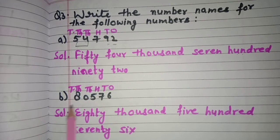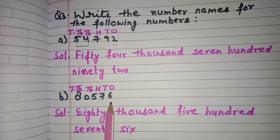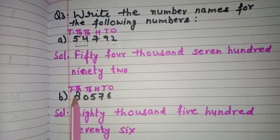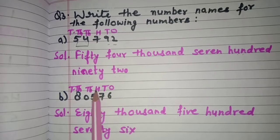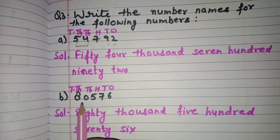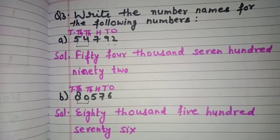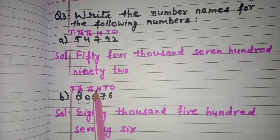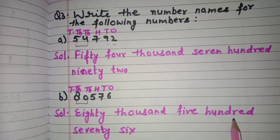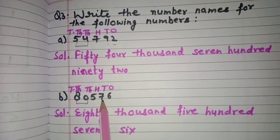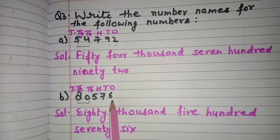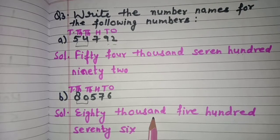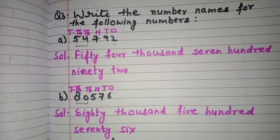Now part b: 80,576. To read this number we mention the places — ones, tens, hundreds, thousands, ten thousands. Now 8 and 0 come under the thousands period, so we will write 80,000. 5 is under the hundreds period, so we write 500. Then 7 and 6 we read together because they are at tens and ones place, so 76. The number name is eighty thousand, five hundred and seventy-six.